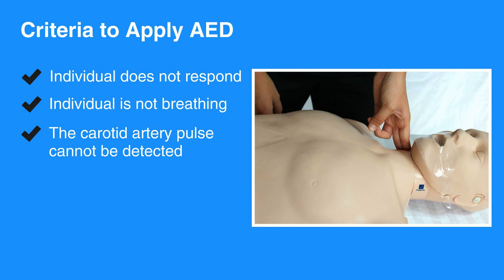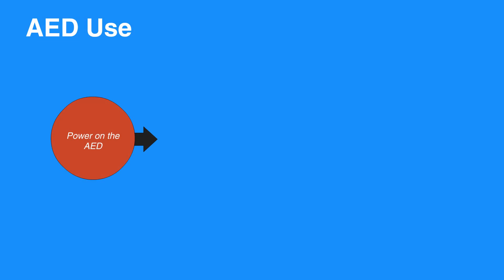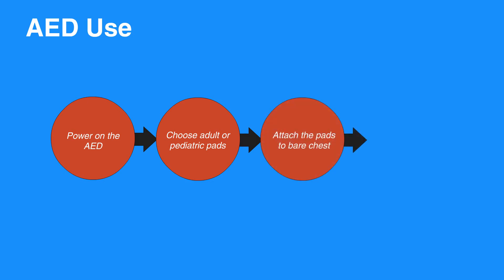Let's review the basic steps of using an AED. First, power on the AED. Choose adult or pediatric pads. Attach the pads to bare chest and make sure cables are connected. Be sure not to attach the pads over any medication patches, and dry the chest if necessary. Place one pad on the upper right side and the other on the chest a few inches below the left arm.